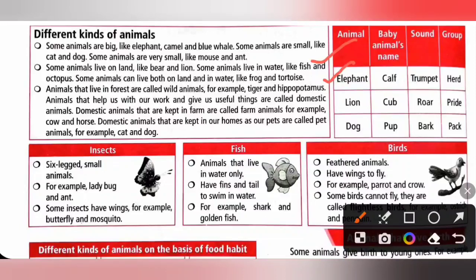Animals that live in forest are called wild animals, for example tiger and hippopotamus. Animals that help us with our work and give us useful things are called domestic animals. Domestic animals that are kept on a farm are called farm animals, for example cow and horse.